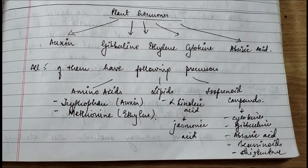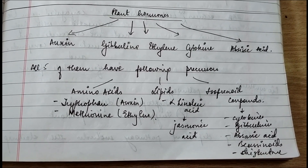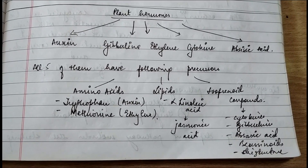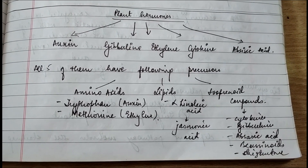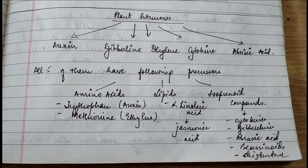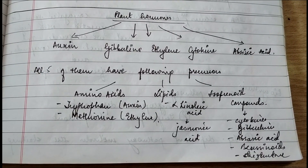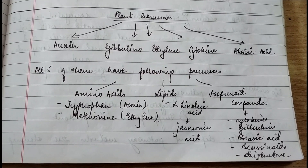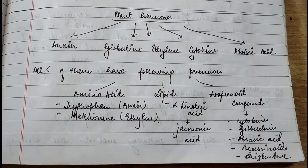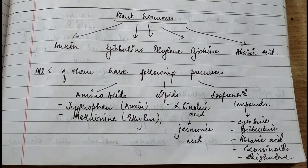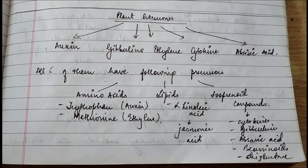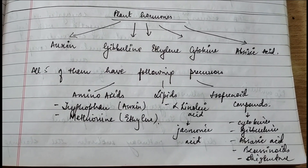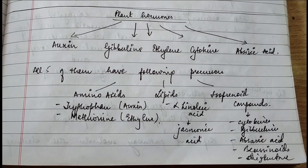Welcome back to the channel. Today we'll be starting a new video on plant hormones. Plant hormones are naturally occurring organic substances present inside plants. In some tissues they may be characterized by low concentration, and in others by high concentration. Their amount is totally dependent upon the plant. Plant hormones are able to exert their action locally or at a distance.